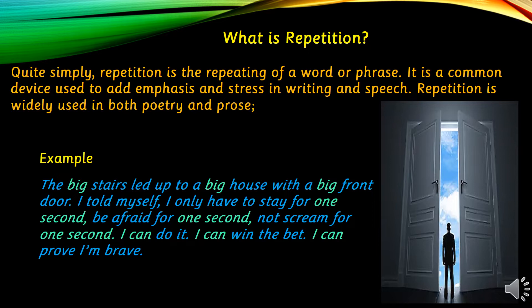How does it work? Let's look at an example. 'The big stairs led up to a big house with a big front door.' Now here in this sentence the word 'big' has been used three times. The writer wants the reader to understand that it was not an ordinary door, not an ordinary staircase, not an ordinary house — it was big. And this 'big' is important for the reader to understand because it is going to set the mood of the story and the tone of the writer, and help understand the atmosphere. So over here, 'big' has been highlighted.